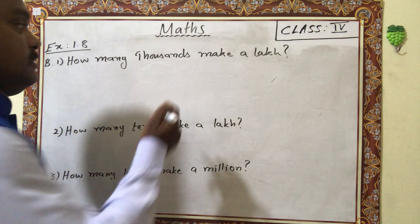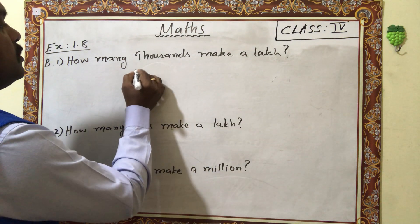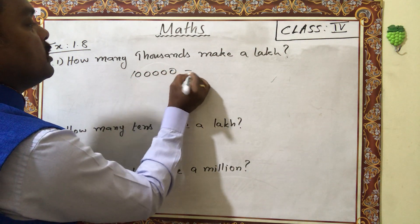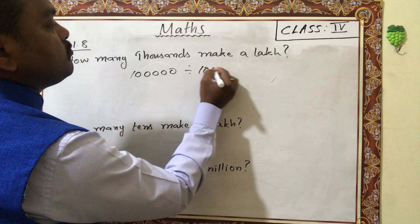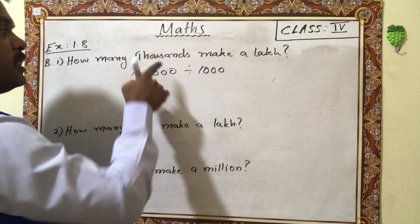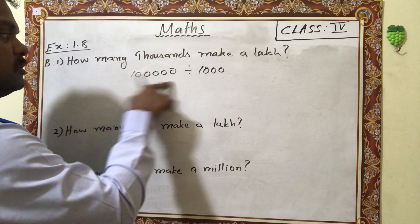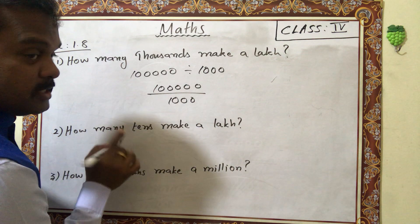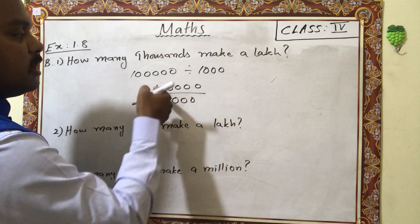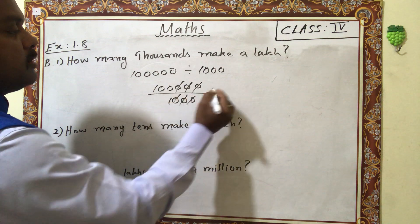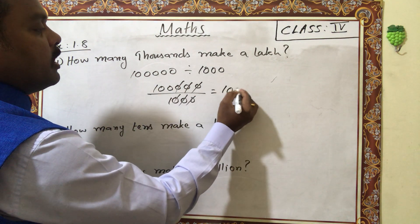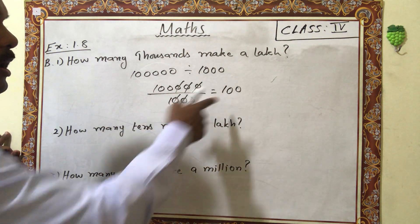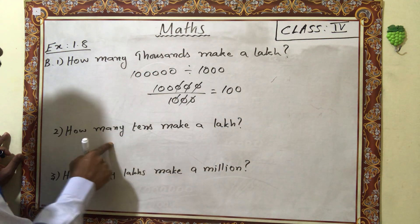First question: how many thousands make a lakh? First, write lakh divided by thousand. You will get the answer. Lakh divided by thousand — there are three zeros here and also three zeros there, so cut the three zeros and three zeros. The remaining is hundred. So hundred thousands make a lakh.